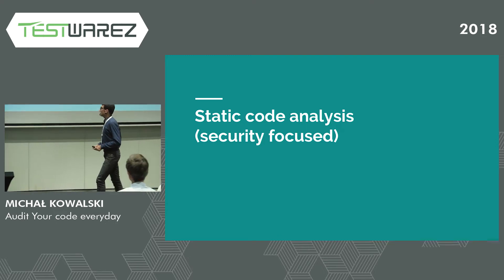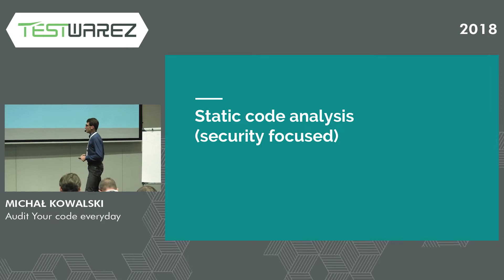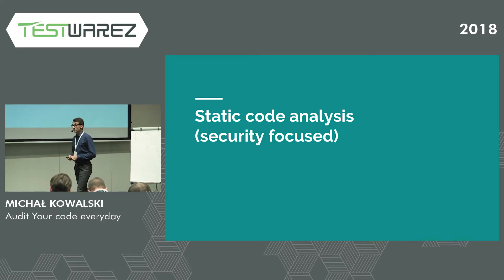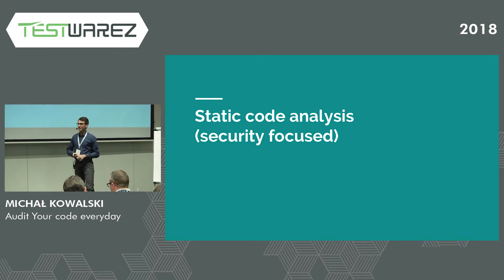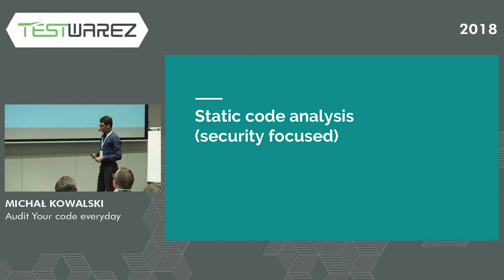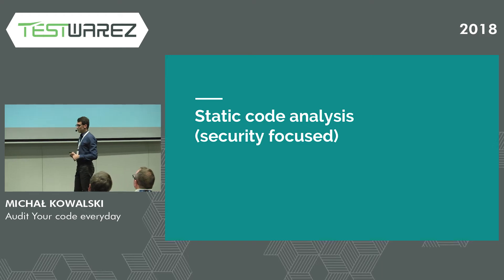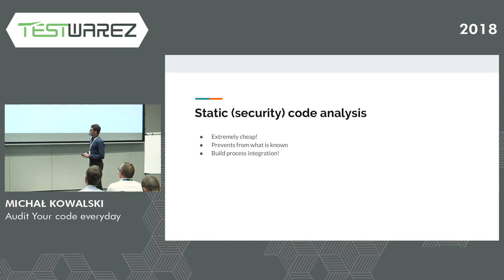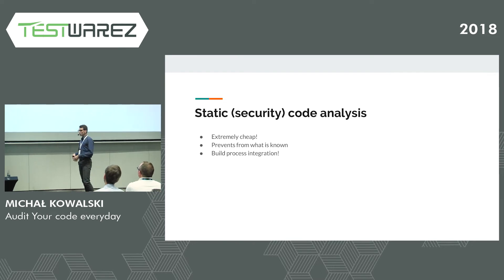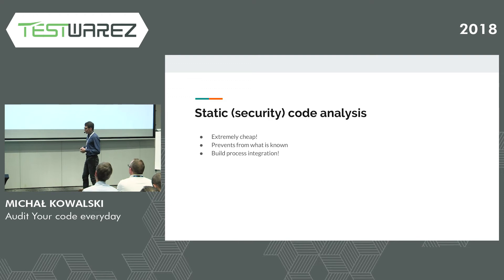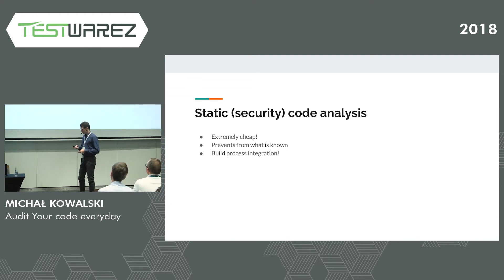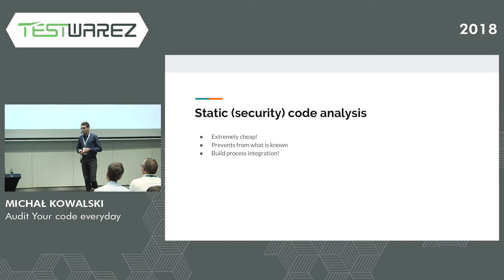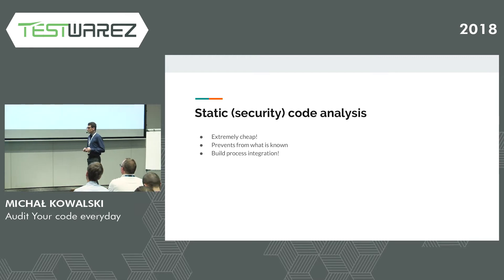Let's jump to the next topic: static code analysis, but the security-focused kind. How many of you already use a tool like SonarQube in your projects? We're already checking our code against code smells from a quality perspective — why couldn't we do the same with security? We should do that because it's extremely easy and cheap, since we already have those tools and a stable process. It can prevent us from known vulnerabilities. There are new zero-day vulnerabilities, but there are also many bugs that are known to be bugs, and we can prevent ourselves from them. It's very easy to integrate with your build process.